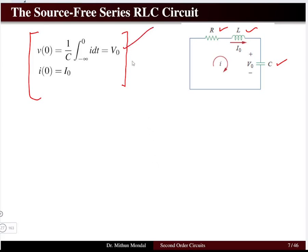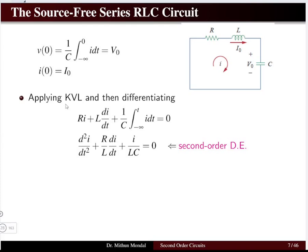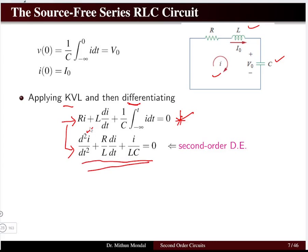For the source-free series RLC circuit, the initial voltage on the capacitor is V₀ and the initial inductor current is I₀. Applying KVL and differentiating gives a pure second order differential equation. This equation has two derivative terms confirming it is second order. The series RLC network is therefore governed by a second order differential equation.